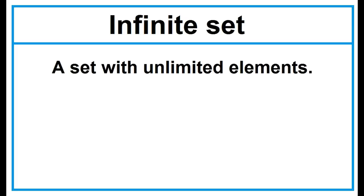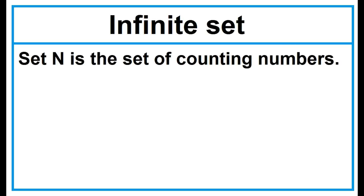Infinite Set — a set with unlimited elements. Example: Set N is the set of counting numbers. The elements of Set N are 1, 2, 3, and so on. The cardinality of Set N is infinite.